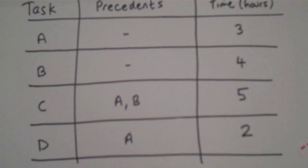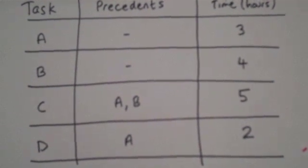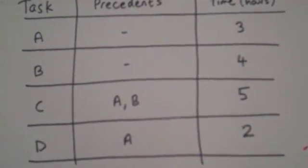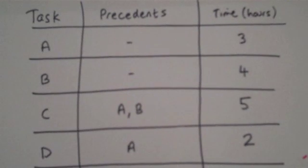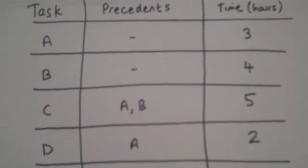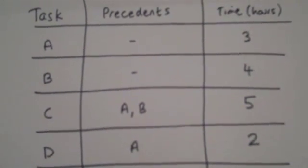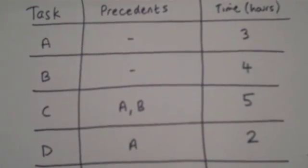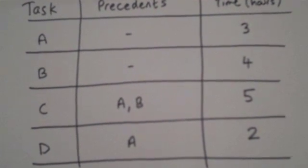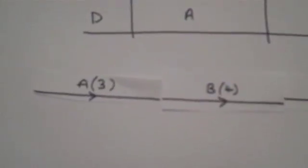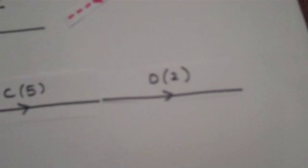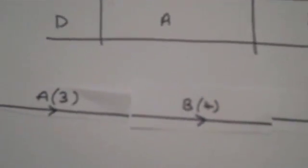Down the right-hand side is the time each task takes. A takes 3 hours, B takes 4, C takes 5, and D takes 2. What's important is that C must happen after A and B, and D must happen after A. If one person were doing this, it would take 14 hours.